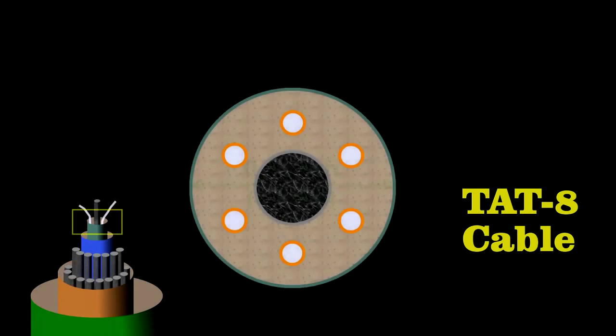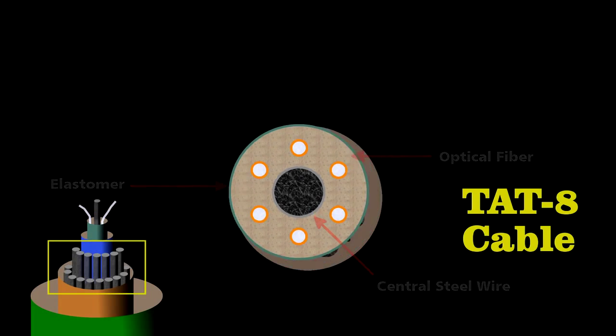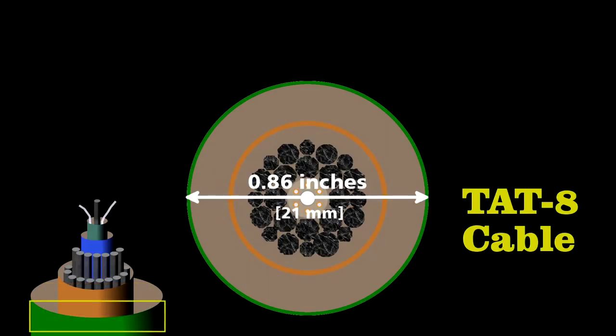Engineers designed the cable carefully to survive on the ocean floor. At its center lies the core. Less than a tenth of an inch in diameter, it contains six optical fibers wrapped around a central steel wire. They embedded this in an elastomer to cushion the fibers, surround it with steel strands, and then sealed it inside a copper cylinder to protect it from water. The final cable was less than an inch in diameter, yet it could handle some 40,000 simultaneous phone calls.